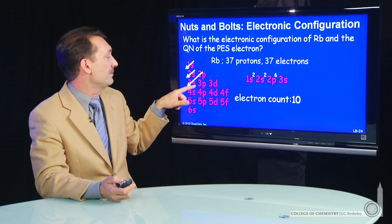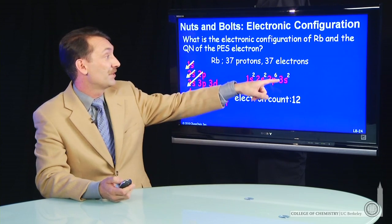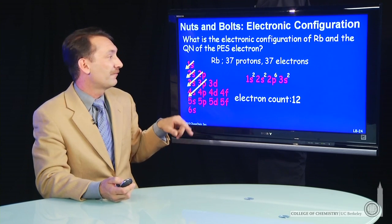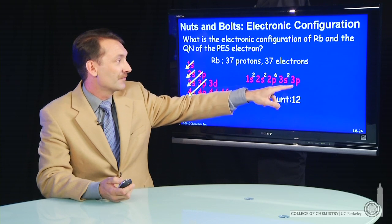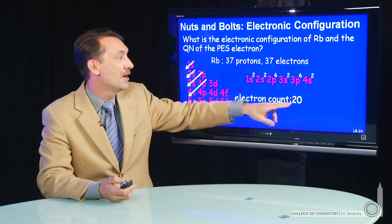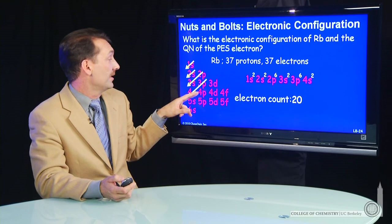Then the 3s will fill with its two, bringing our count to 12. The 3p and the 4s will fill. 3p holds six. The 4s holds two, 20 total electrons.